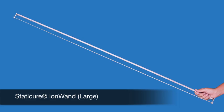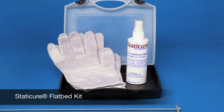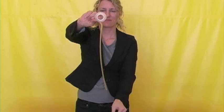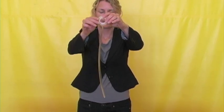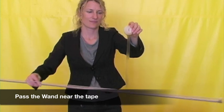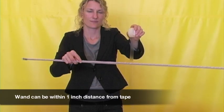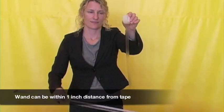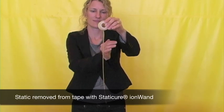Now we will use the ion wand from the flatbed kit to remove the static from the tape. Again, show your customers that the static charge is on the tape. Next, pass the wand within one inch of the tape. It doesn't have to touch the material. You can see that the static charge is easily removed using the wand.